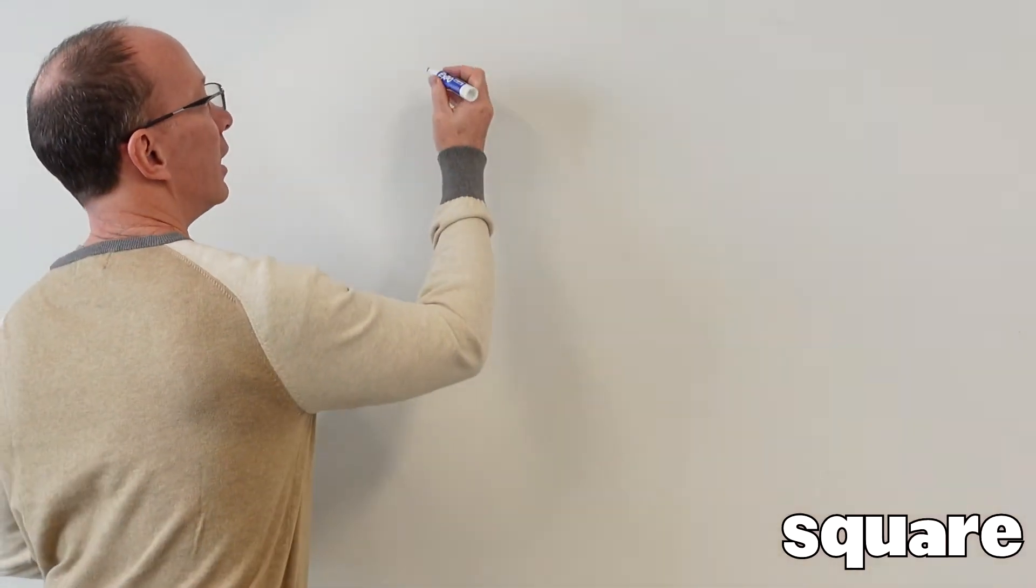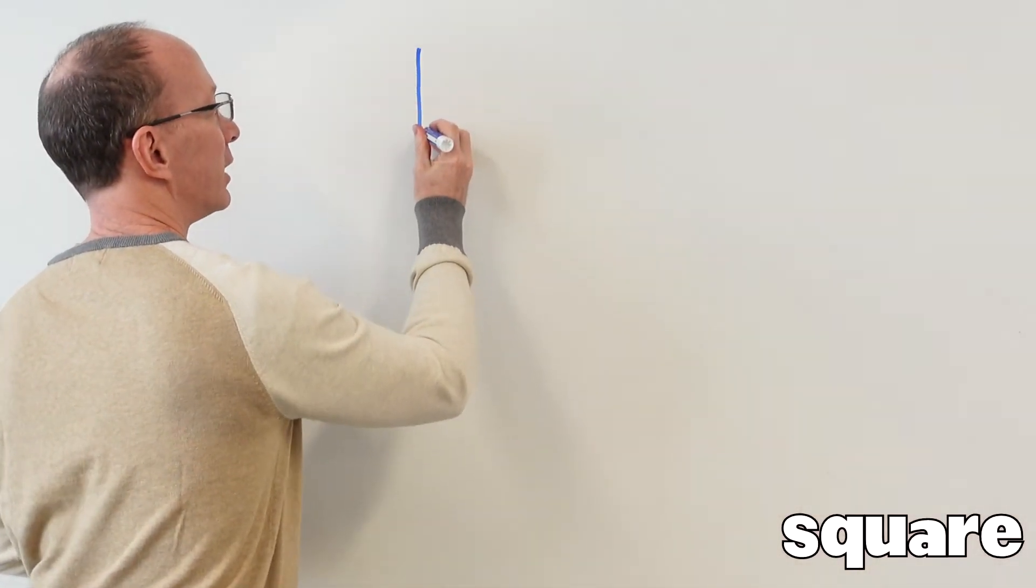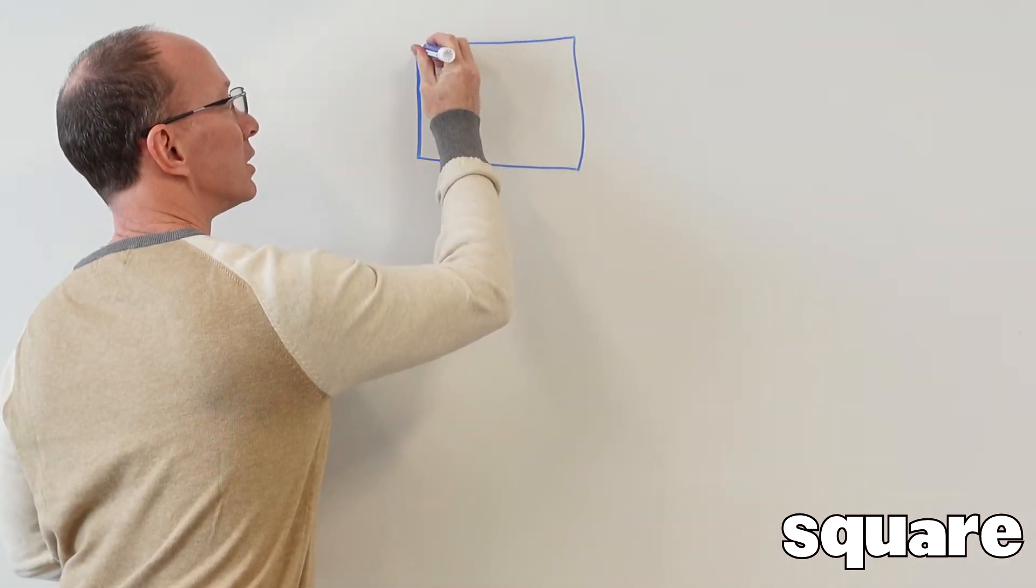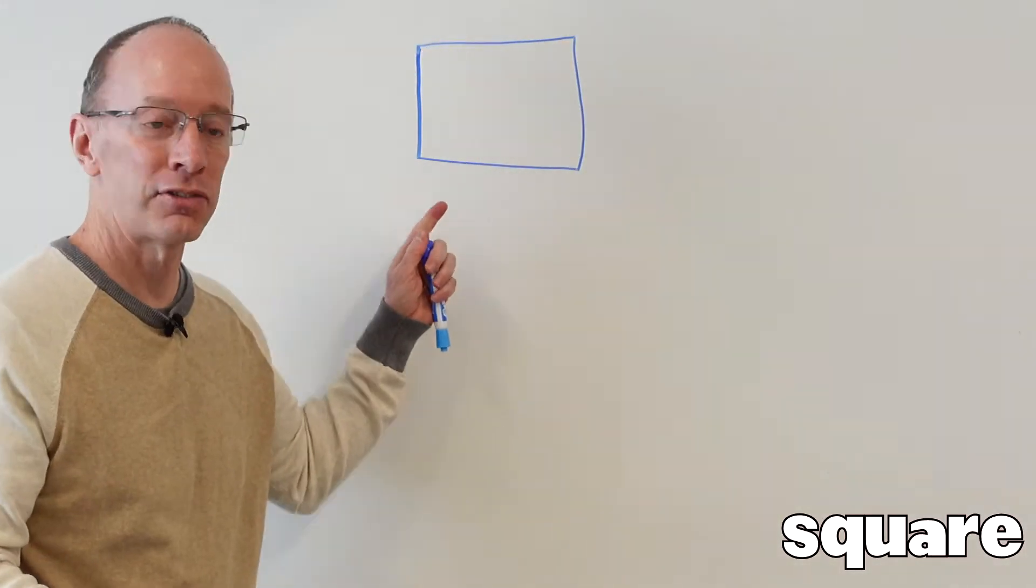All right, first of all, let's go ahead and draw a square. A square is equal on all four sides, and a square has four sides.